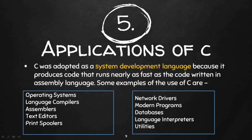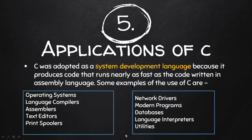Applications of C: C was adopted as a system development language. Various tasks are performed using C for software development because it produces code that runs nearly as fast as code written in assembly language. Some examples of C programming software are: operating systems, language compilers — which convert code into computer-readable form — and text editors like Notepad.